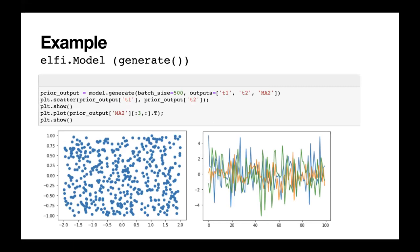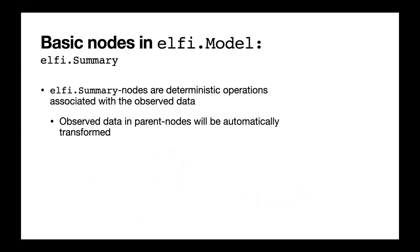Here we use the generate method to generate 500 samples from the model and ask for outputs from all nodes currently in the model: T1, T2, and MA2. We can plot them using whatever plotting tool we wish — ELFI has some built-in plotting functionality. T1 and T2 have uniform independent distributions, giving a uniform scatter plot, and we can look at the simulator output over time. MA2 is working as it should.